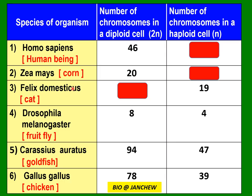Here is some interesting information on the number of chromosomes in diploid and haploid cells of various species. Homo sapiens — humans — have 46 chromosomes in each diploid cell and 23 in the haploid cell, since 46 divided by 2 equals 23. These 23 chromosomes are all different, from chromosome number 1 to 22 plus one sex chromosome. Haploid cells in the human body are the sperm and ovum; most other cells are diploid. Zea mays, or corn, has 20 chromosomes in the diploid cell and 10 in the haploid cell.